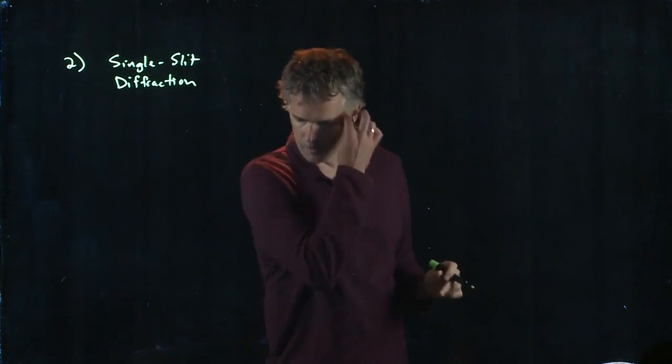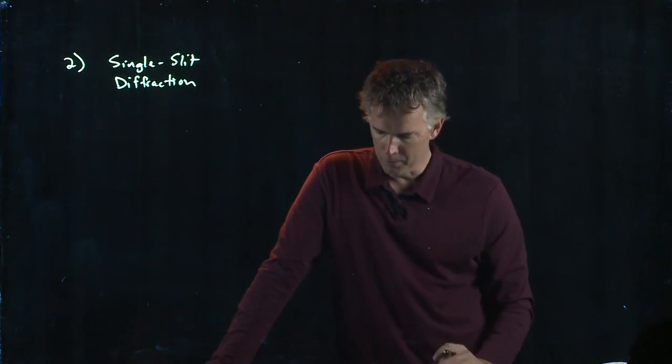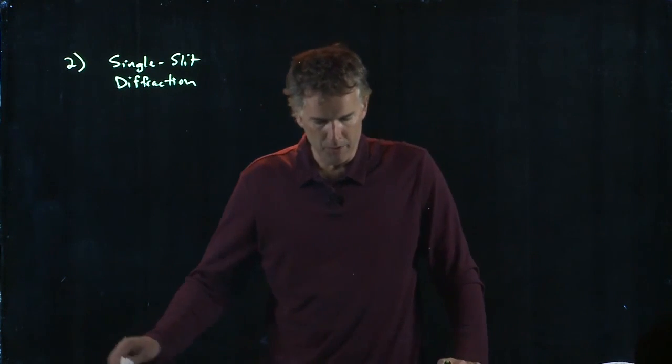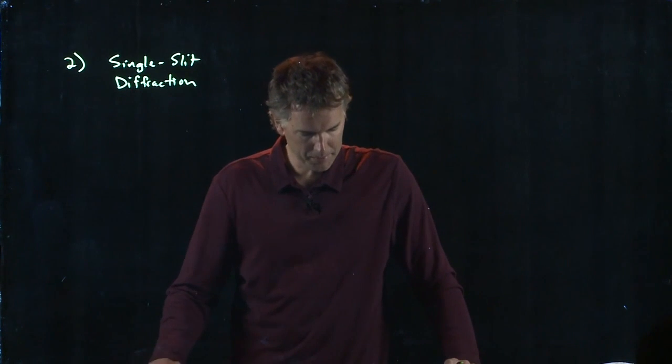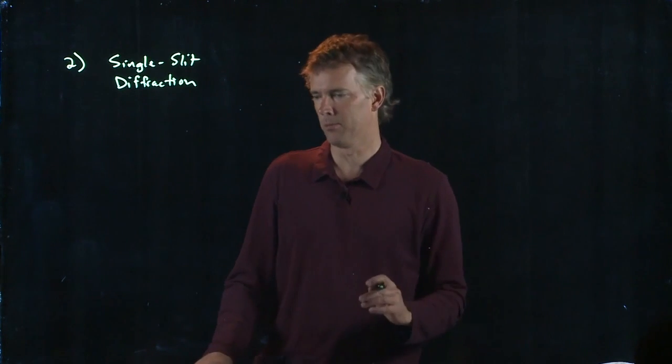It says the following: a single slit diffraction pattern is formed on a distant screen. Assuming the angles involved are small, by what factor will the width of the central bright spot on the screen change if the slit width is doubled?